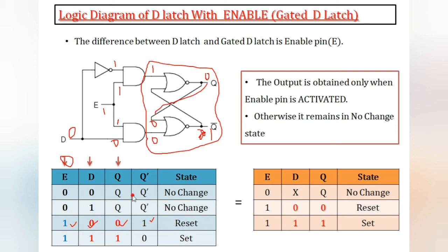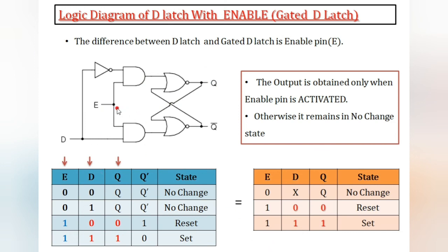Whatever the previous output may be, it is reset to zero — this is the reset state. Next, enable = 1 and D = 1. One and one, one inverted gives zero. Zero and one to AND gate results zero; one and one to AND gate results one. SR latch with zero and one — result is one. Data is 1, output is 1 — this is the set state.